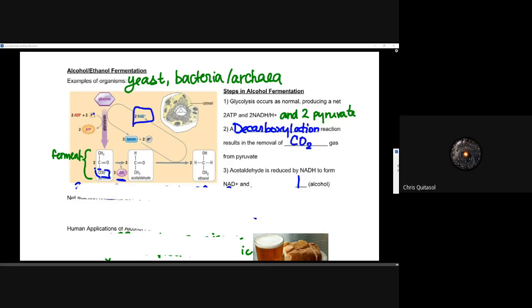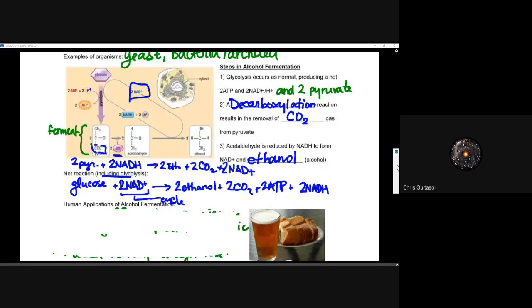We have what's called the decarboxylation reaction, which results in the removal of CO2 gas from that pyruvate. That CO2 gas gets produced as a result of that ethanol or alcohol fermentation. What's then used to make that further bit of energy is that acetyl aldehyde is now reduced by NADH to form that NAD plus as well as ethanol. This is very important because now we have that net two ATP gain, as well as that NADH gets reformed into NAD plus, and it allows for that process to happen all over again.